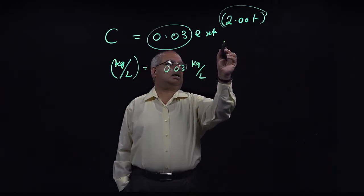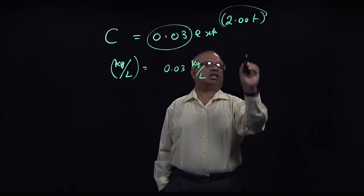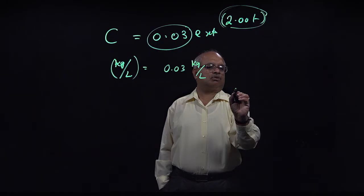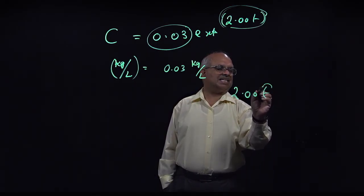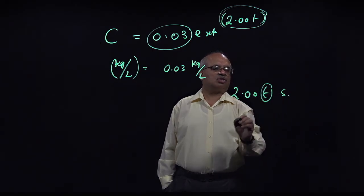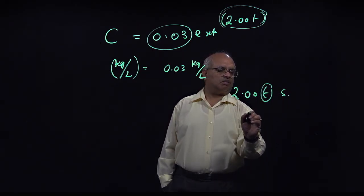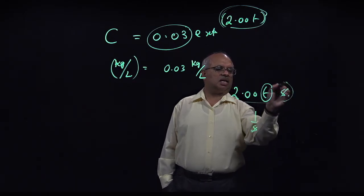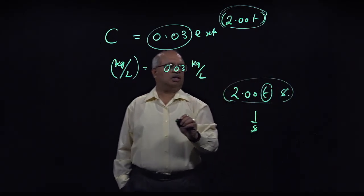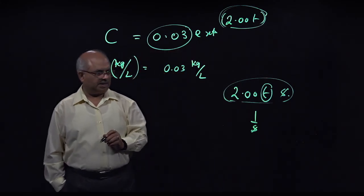And the exponent should be dimensionless. 2 times t should be dimensionless, and t is measured in seconds. So this should be 1 over second. That way, these two can get cancelled and this will be dimensionless. So that's one way of looking at it.